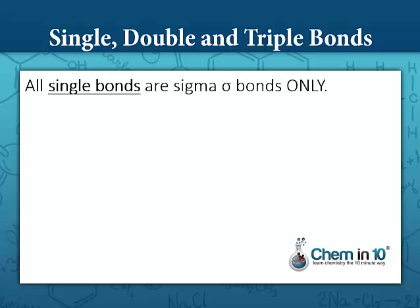All single bonds are sigma bonds only. They could be sigma bonds between s orbitals or even sigma bonds between p orbitals.